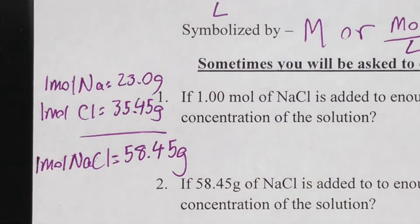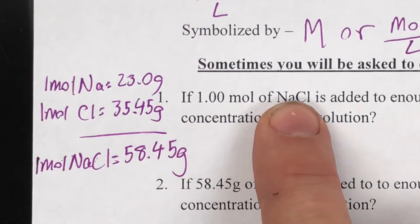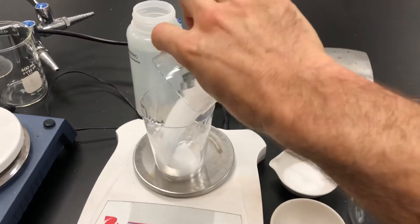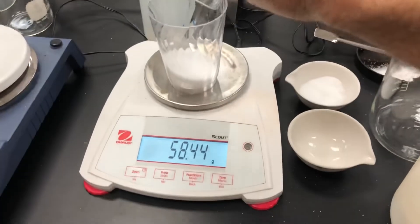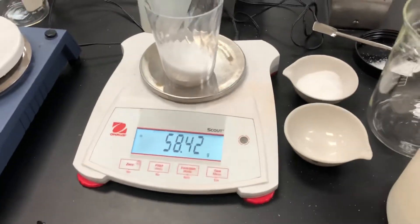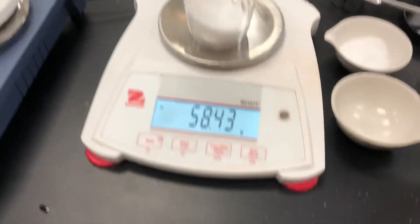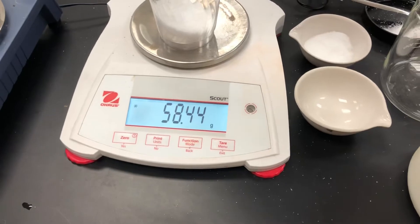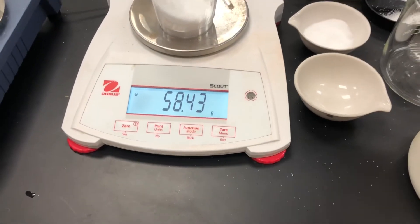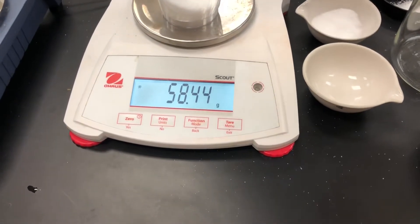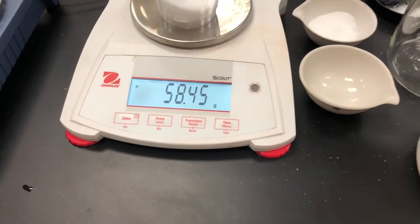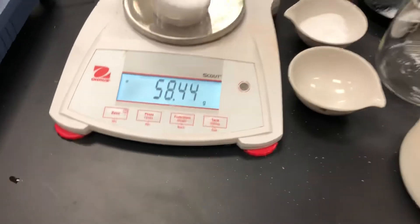That's how much I'm going to measure when it says one mole of NaCl. I've got that measured out already, so let me put a cup on the scale and zero that out. I've got 58.45 grams of salt already almost measured — just add a little pinch. There we go, so we have one mole of salt now.